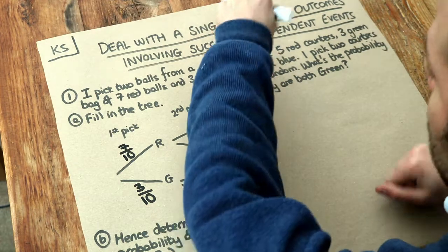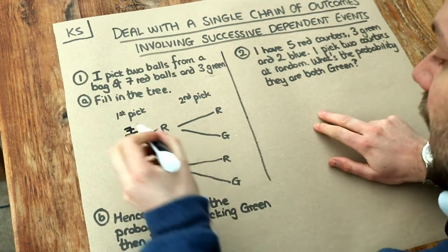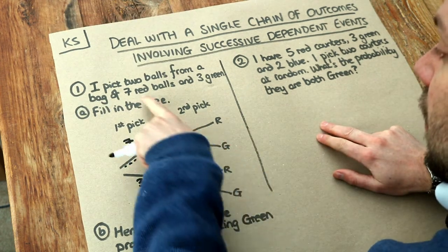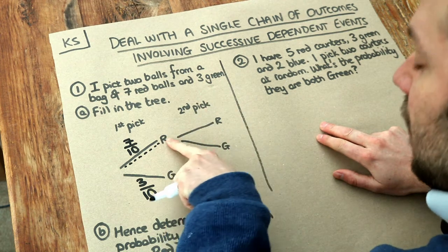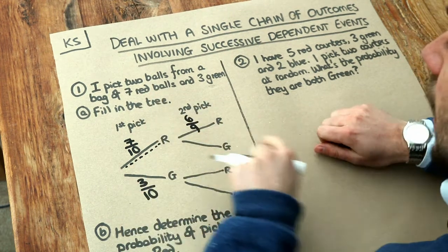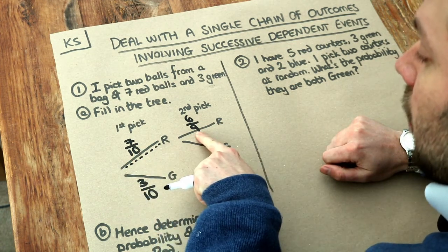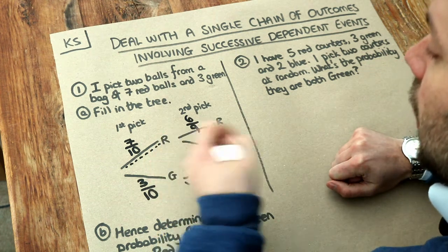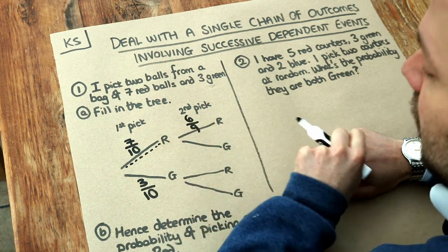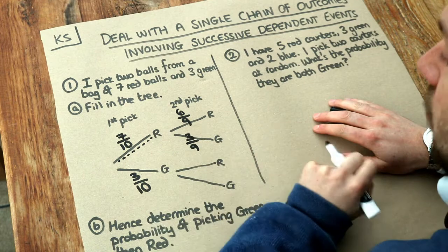Because once you've taken the first ball you're not putting it back, that affects the probabilities on your second pick. If we picked a red ball on our first pick, we've got six red balls left but still three green. So the probability of getting red again is six out of nine. Notice the denominator went down by one because there's one less ball overall, and the numerator also went down because there's one less red. So there's a three ninths probability of getting green, given we picked red first.